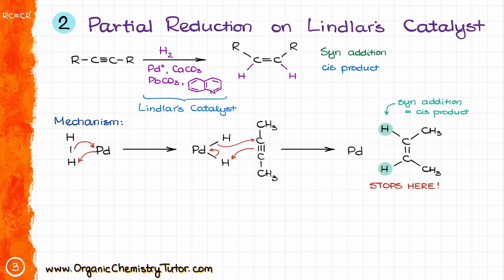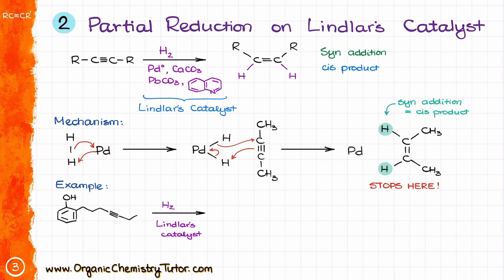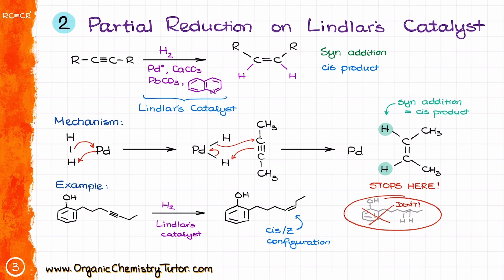This reaction was quite revolutionary when it was developed in the 50s, as it gave scientists a neat and controlled way to partially reduce the triple bond. But since it's a syn addition, you have to be very careful with how you show your products. It's very natural to zigzag the chains when drawing your molecule, but remember that we are making a cis double bond here. So if your zig goes the wrong zag, so to speak, you'll lose precious points on the exam. When drawing the product, you must choose the correct configuration for the double bond.